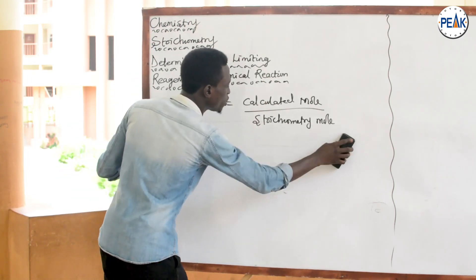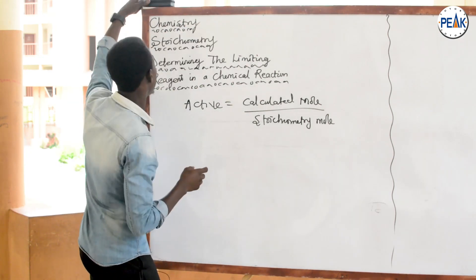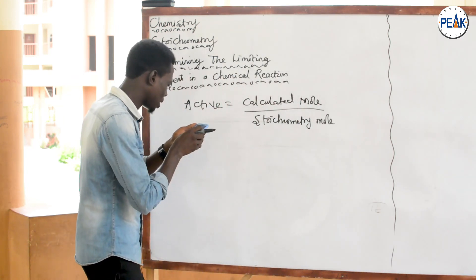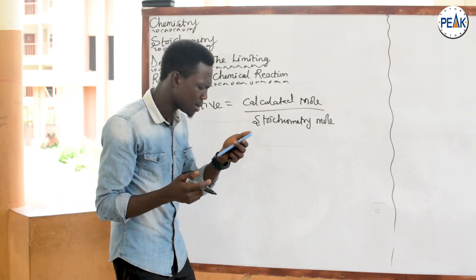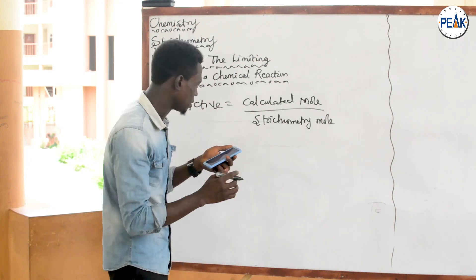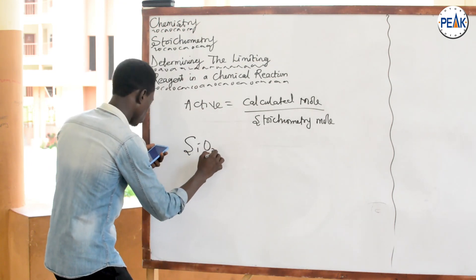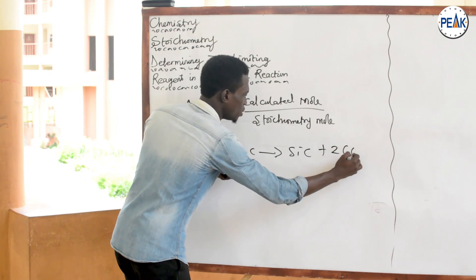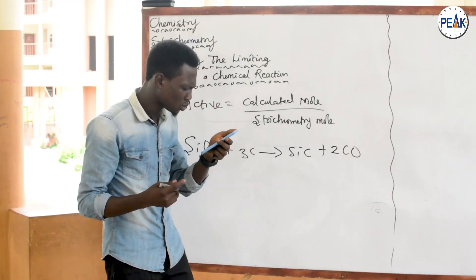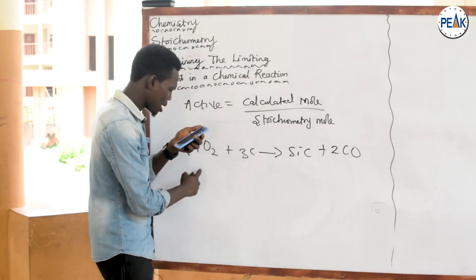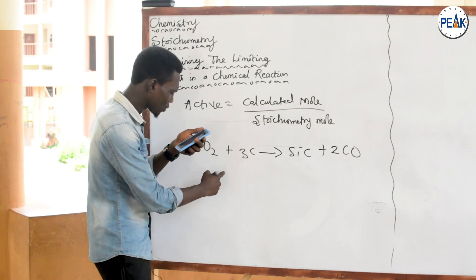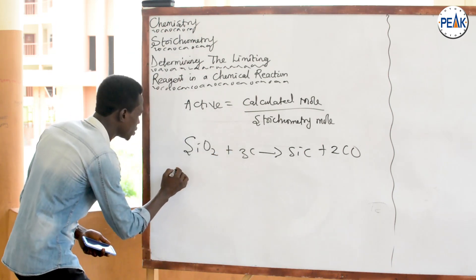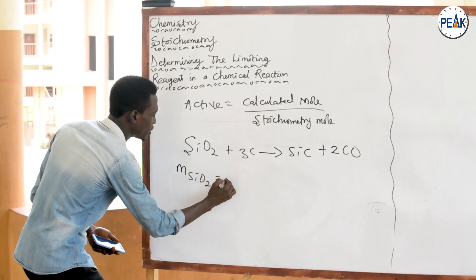Now let's bring this to chemistry using a question. Silicon carbide, an abrasive, is made by the reaction of silicon dioxide with graphite: SiO₂ + 3C → SiC + 2CO. If 100 grams of SiO₂ and 100 grams of carbon are reacted for as long as possible, which one is the limiting reagent?